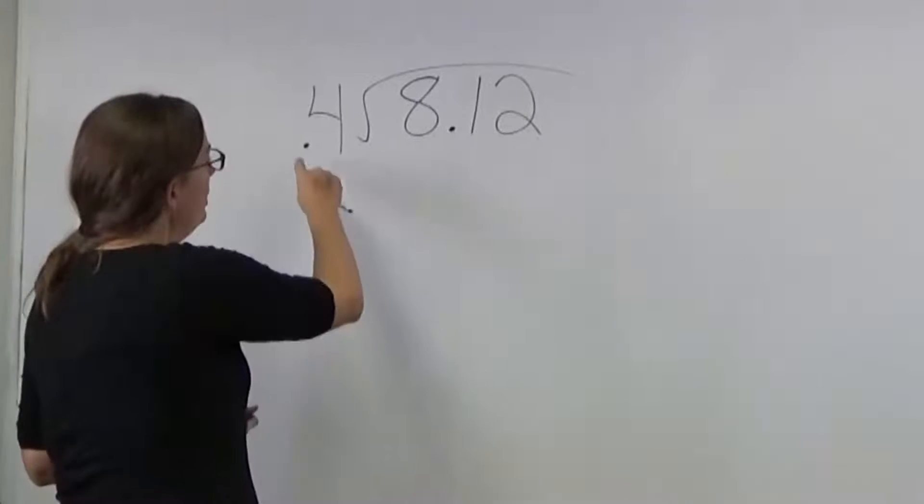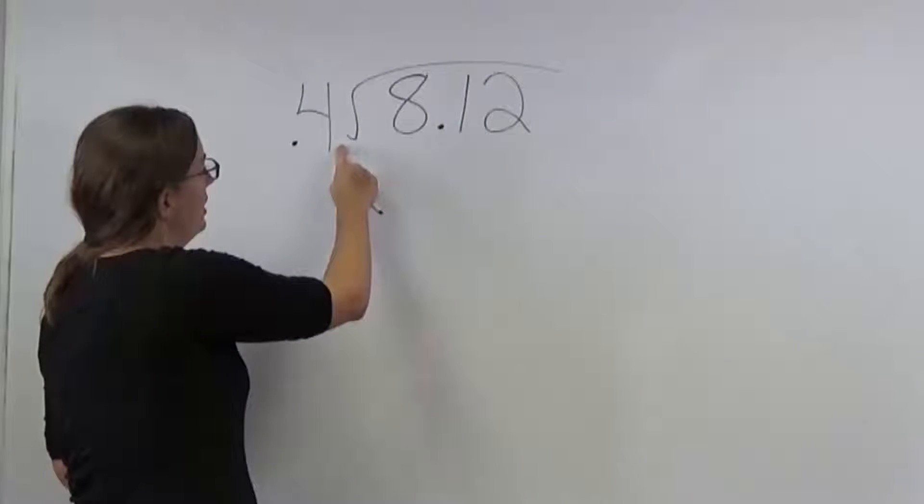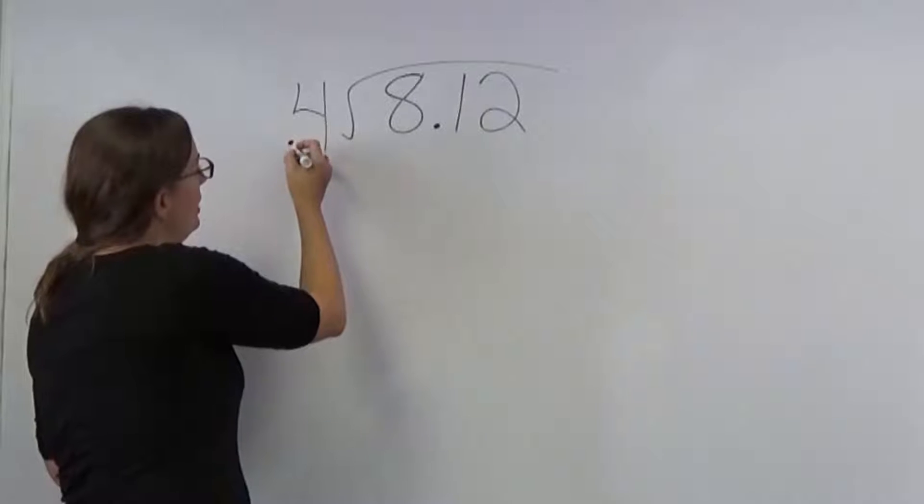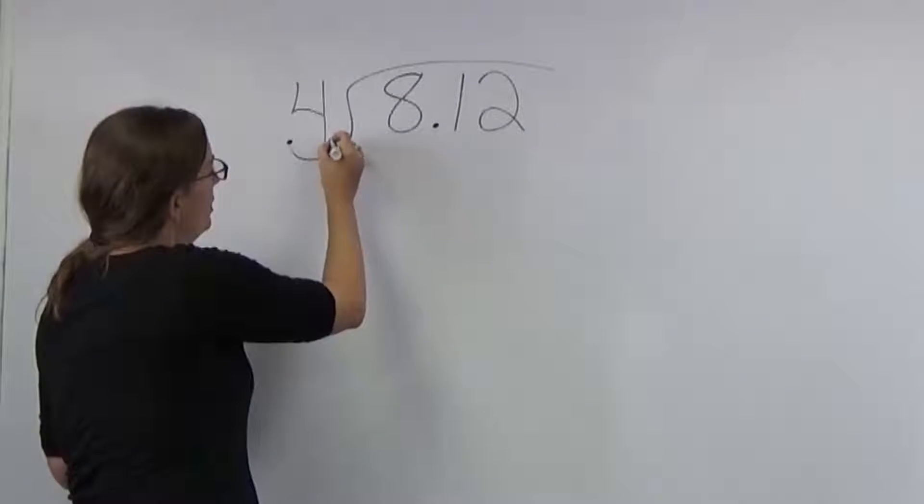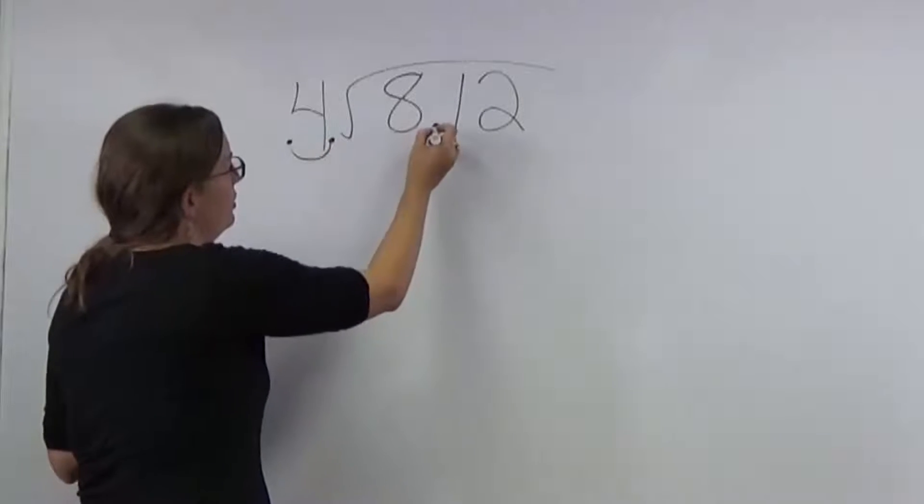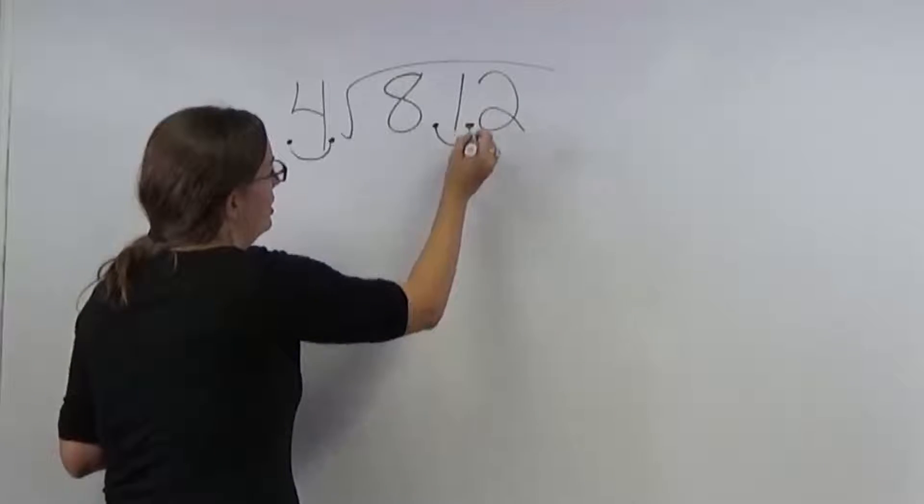When you are dividing with decimals, you need to be able to get the decimal on the other side. So you need to move this over once, but if you move this over once, you have to do the same thing with your divisor.